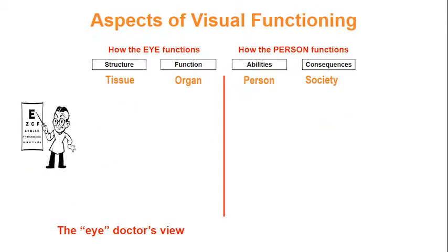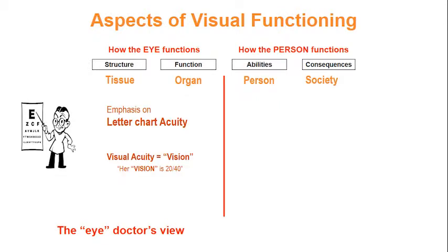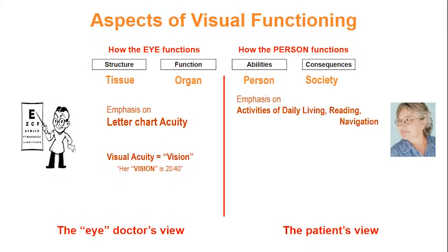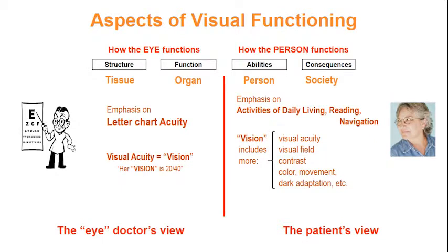When we think of eye doctors, the emphasis tends to be on letter chart acuity. That emphasis is often so strong that we refer to visual acuity as vision — 'her vision is 20/40.' When we shift to the patient side, the emphasis is on activities of daily living. In this context we need to take into account many more aspects of vision: acuity, field, contrast, colour, movement, etc. When we realize that, we must make the earlier statement more accurate by saying that her visual acuity is 20/40.